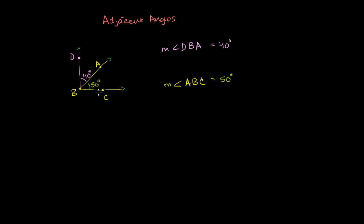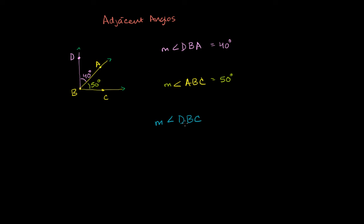Now there's something else that you might notice. We know that the measure of angle DBA is 40 degrees and the measure of angle ABC is 50 degrees. You might be able to guess what the measure of angle DBC is. If you had a protractor right over here, clearly this is opening up to 50 degrees, then going another 40 degrees. So the measure of angle DBC would essentially be the sum of 40 degrees and 50 degrees, which is equal to 90 degrees.